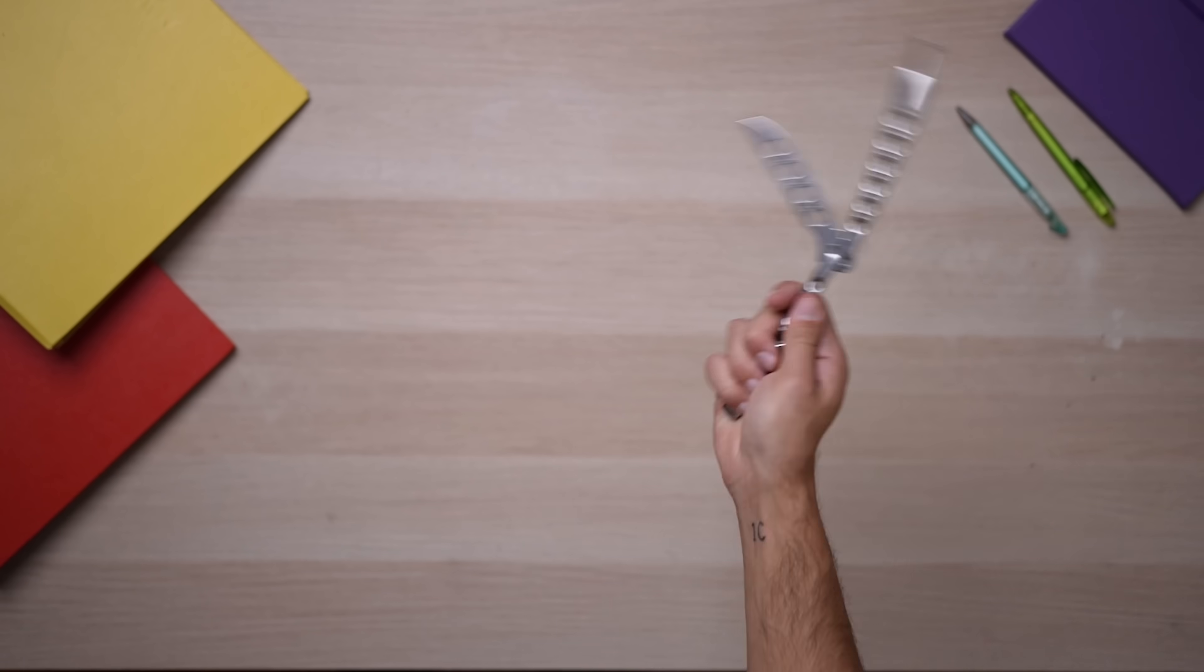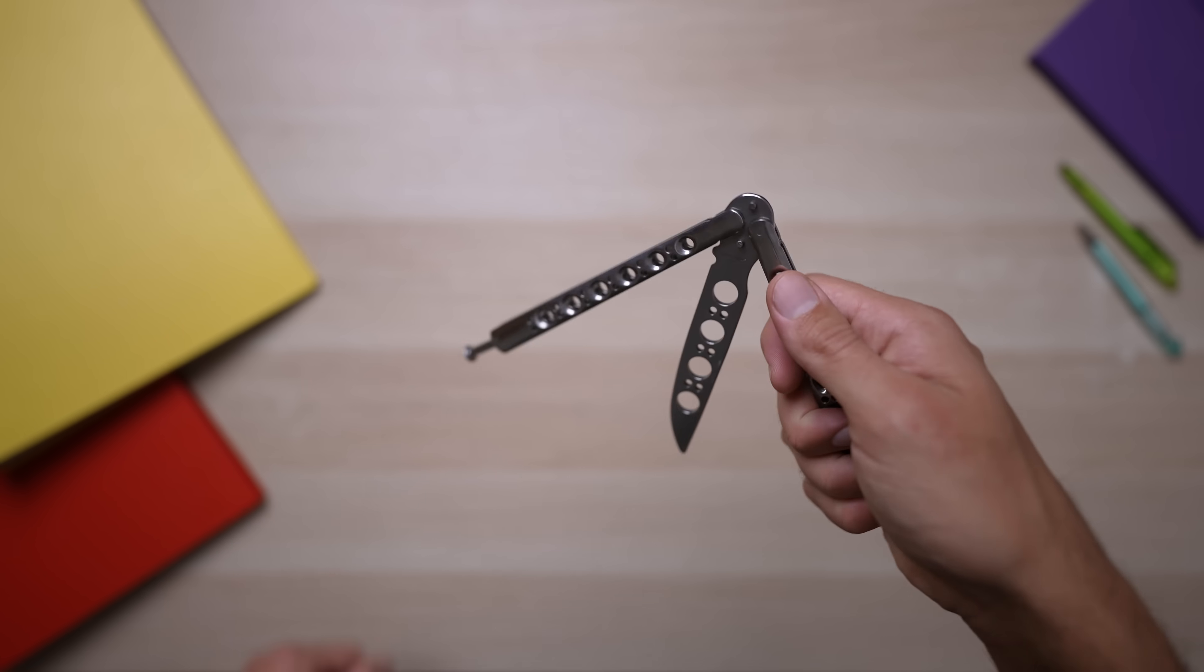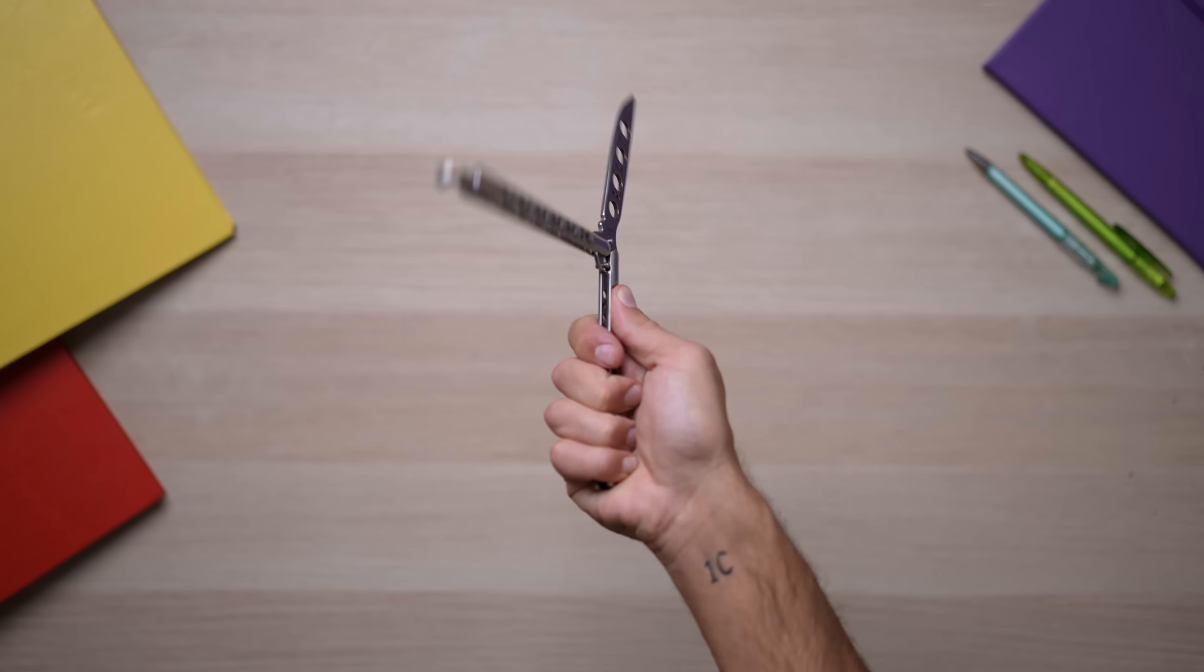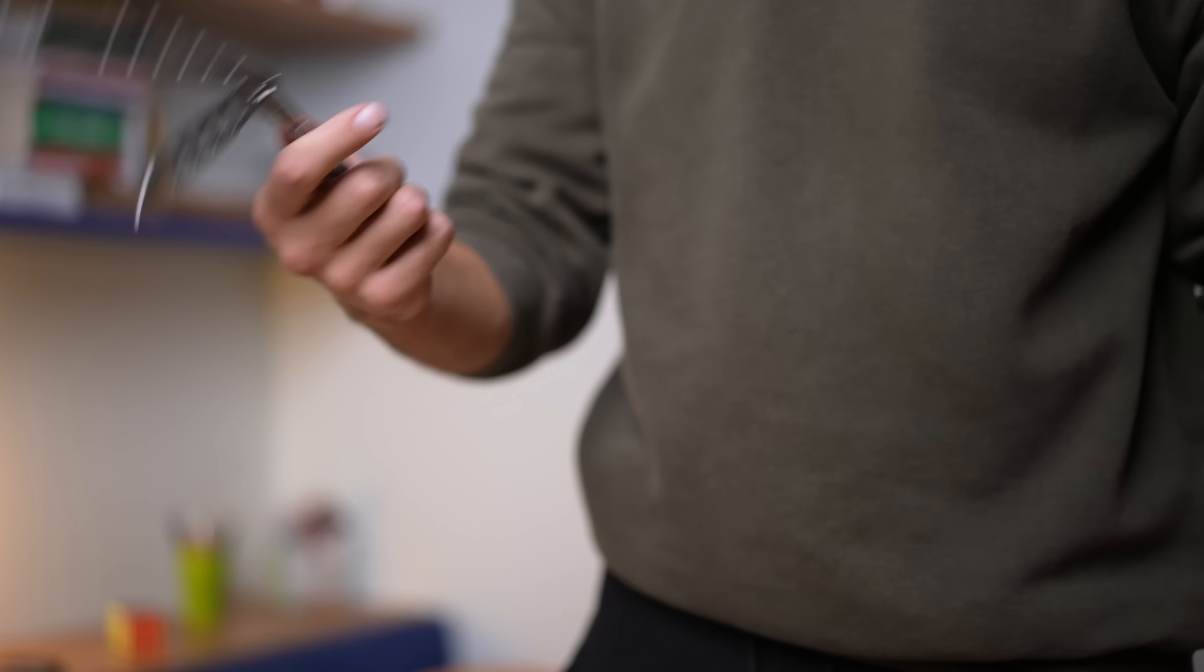I decided to start with the easiest and most common move, the basic open. To begin, grab the knife from the safe handle and flip it over the back of your hand. Now rotate the knife 180 degrees to move the blade downwards. Then by moving the thumb out of the way and flipping the knife up, the trick is done.